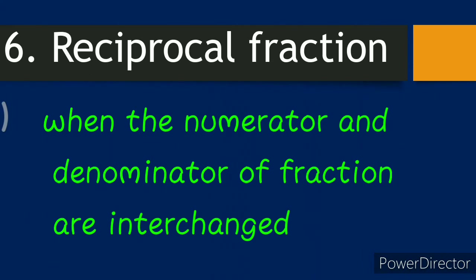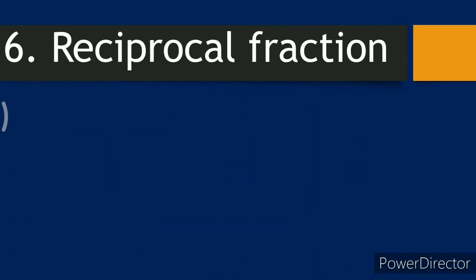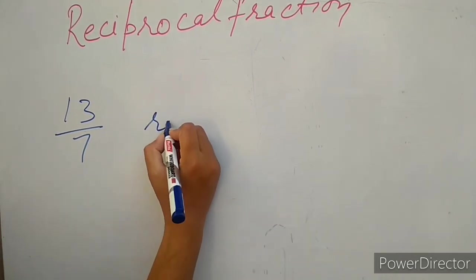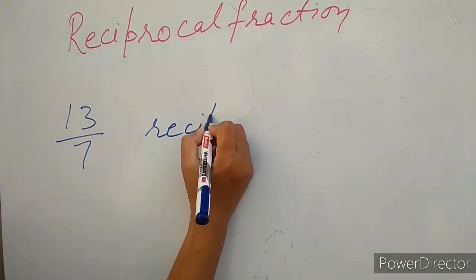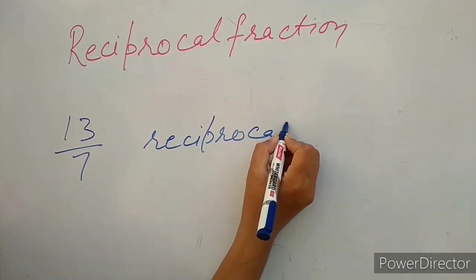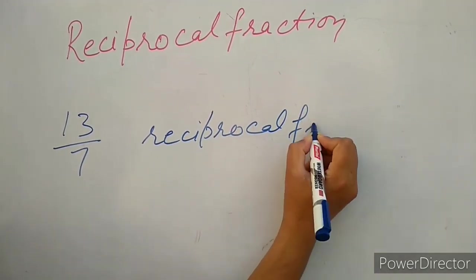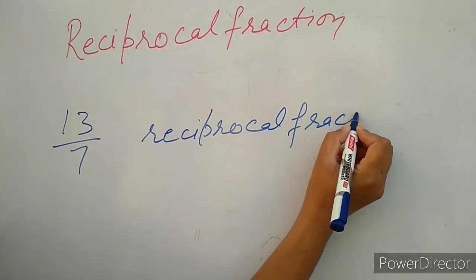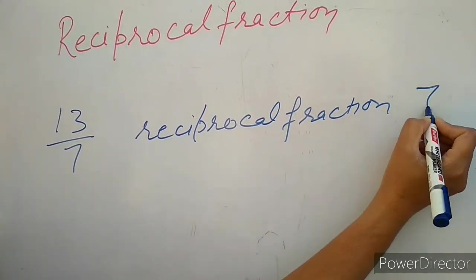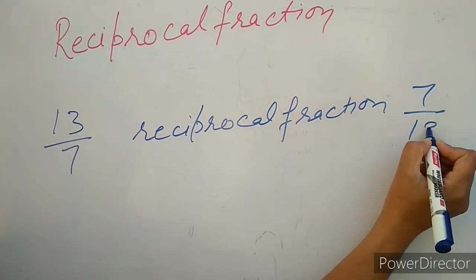Next is reciprocal fraction. When the numerator and denominator of a fraction are interchanged, that fraction is known as a reciprocal fraction. For example, the reciprocal of thirteen over seven is seven over thirteen — we simply interchange the numerator and denominator.